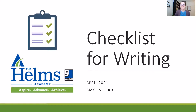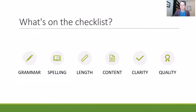Hi everyone, this is Amy from the Helms Academy and today we'll be taking a look at a checklist that you can use to check over your own writing for your HiSET, GED, or TASC tests. When writing an essay, what things should be on our checklist? Well, grammar, spelling, length, content, clarity, and quality are the areas we're going to look at today.